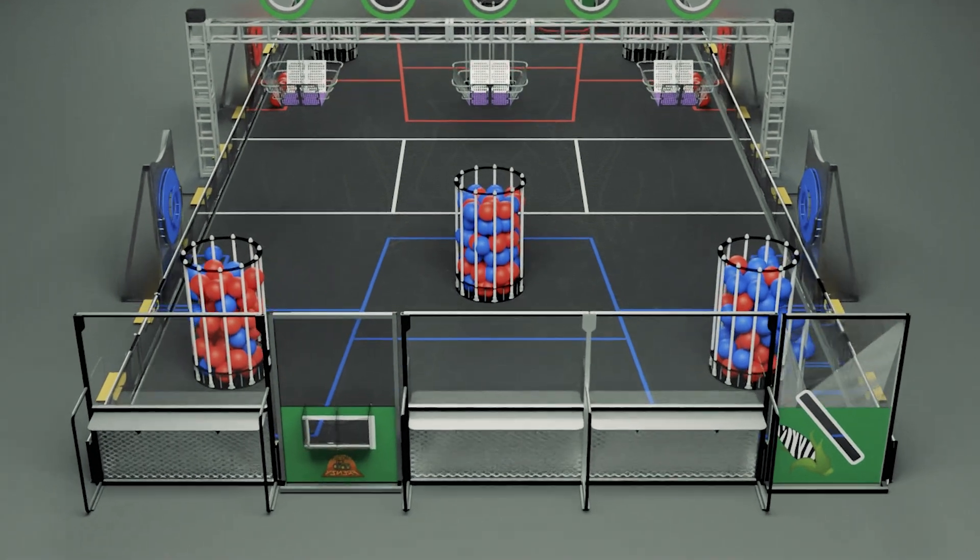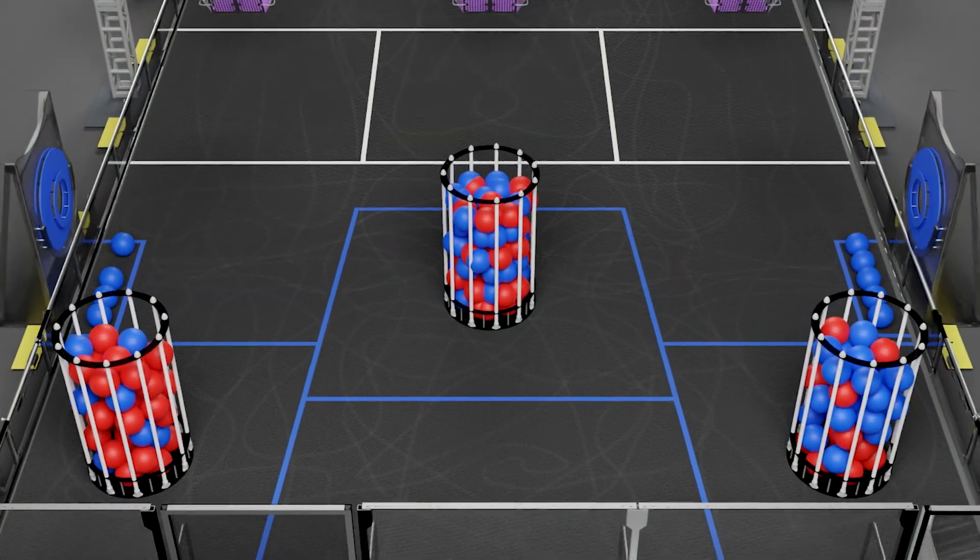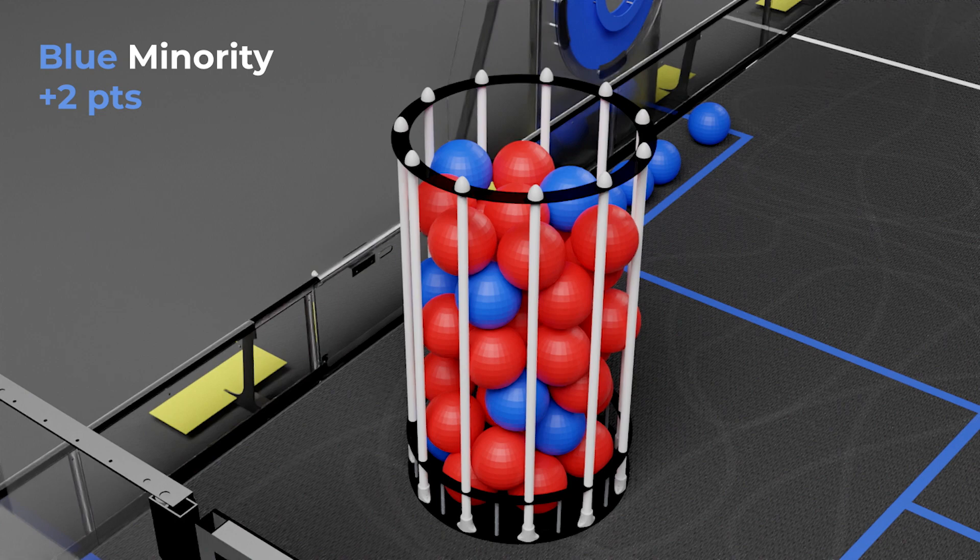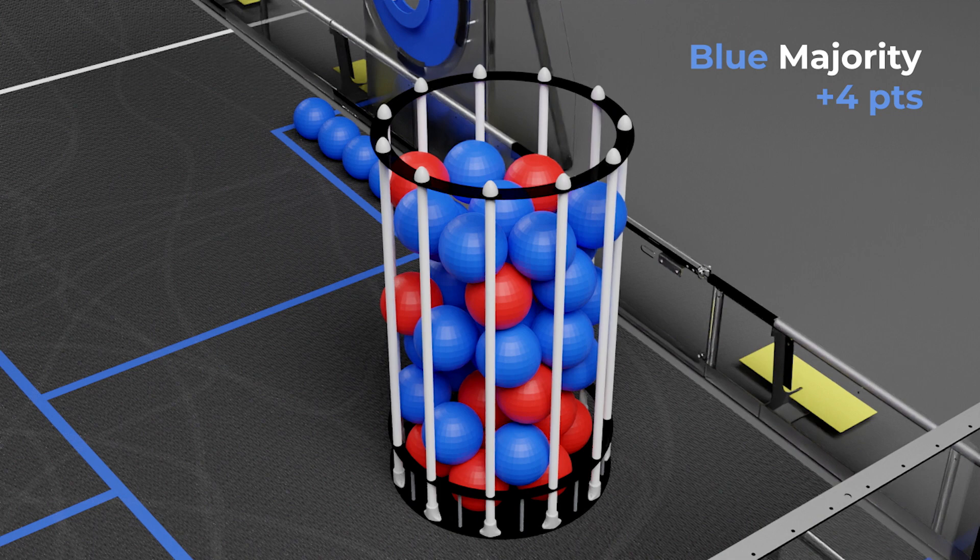Alliances can earn points for having either a majority or a minority in any given silo or market. To have a minority, a silo must contain at least one crop of that alliance, and to have a majority, the majority of crops in a silo must be of that alliance.